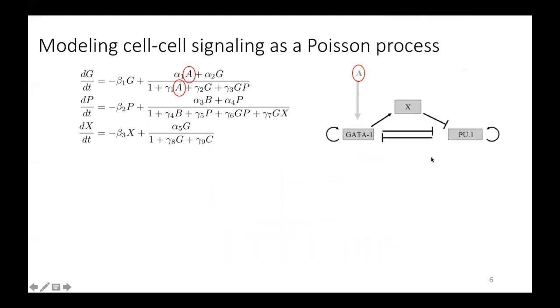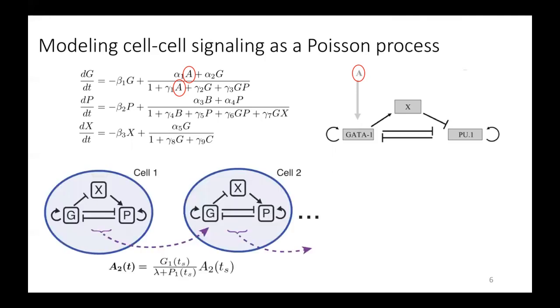From here, we needed to decide what the signal would communicate between cells. And so we began by assuming that signals send a consensus signal between one another. So this means if one cell is becoming erythroid, it will try to recruit its neighbors to also become erythroid.